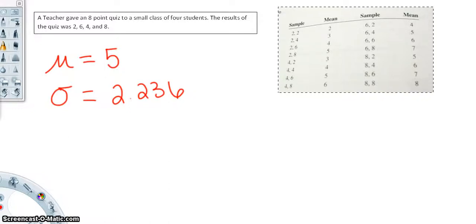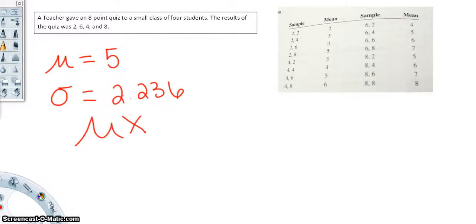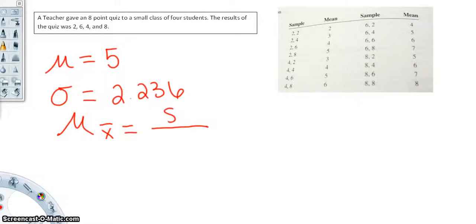Now let's find the mean of the sample means, denoted as mu x-bar. Adding all of the sample means up gives us 80, and we divide by how many there are — 16 of them — to get 5. This is the mean of our sample means. Notice that the mean of our sample means is 5, and the mean of our population is also 5. The mean of the sample means must be equal to the population mean.